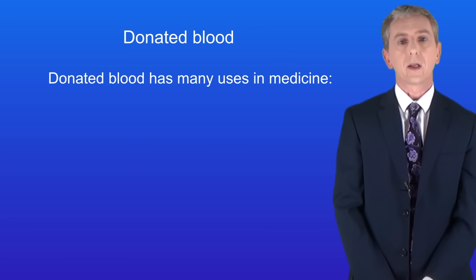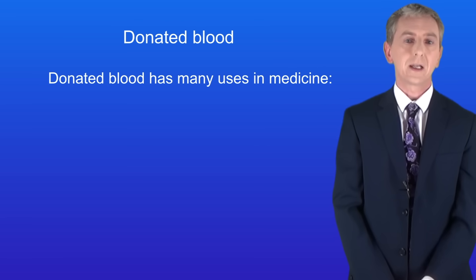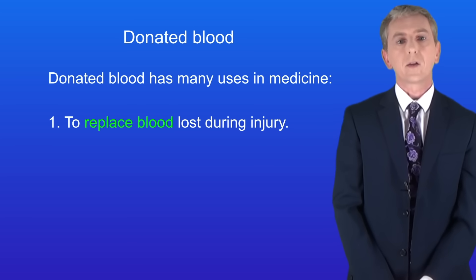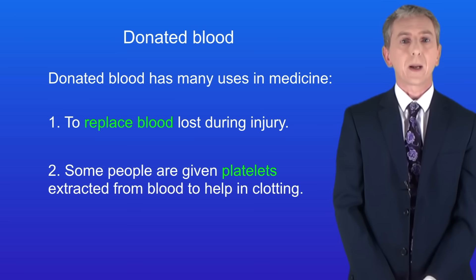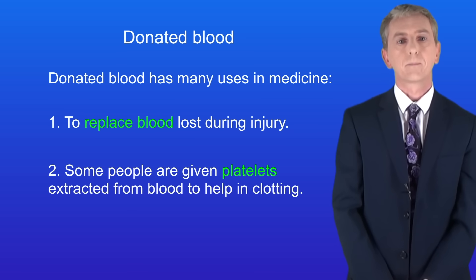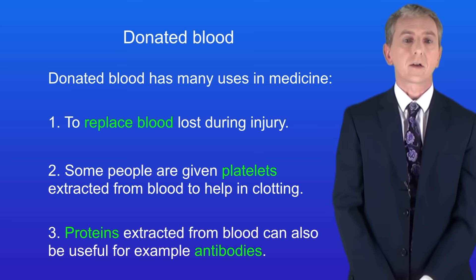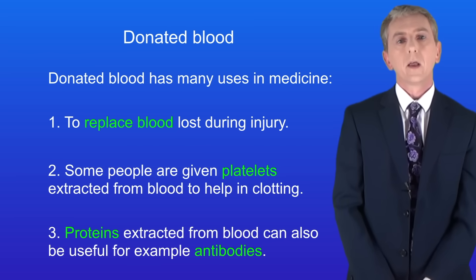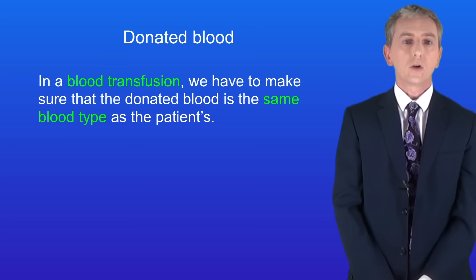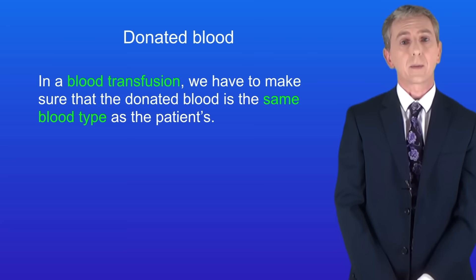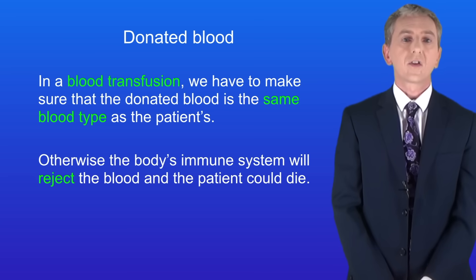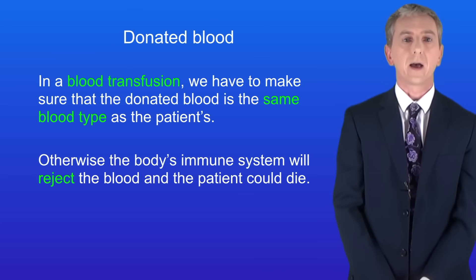Lots of people are blood donors and donated blood has many uses in medicine. For example, it's used to replace blood loss during injury. Some people are given platelets extracted from blood to help in clotting, and proteins extracted from blood — such as antibodies — can also be useful. There are a couple of problems with using blood products. In a blood transfusion we have to make sure the donated blood is the same blood type as the patient's, otherwise the body's immune system will reject the blood and the patient could die.